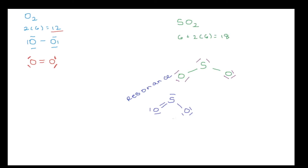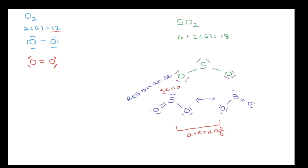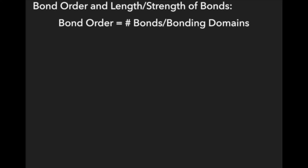What actually exists is not just one structure. Using a double arrow, I can show that another structure also exists with the double bond on the opposite side. The question will be: do I have to draw both versions? The answer is yes. If there were three different positions for just one double bond, you'd have to draw three different versions. Now, the important thing to know about resonance is that neither of these structures actually exists. What actually exists is an average of the two molecules. For example, if one structure were yellow and the other were blue, what would actually exist for SO₂ is the color green.